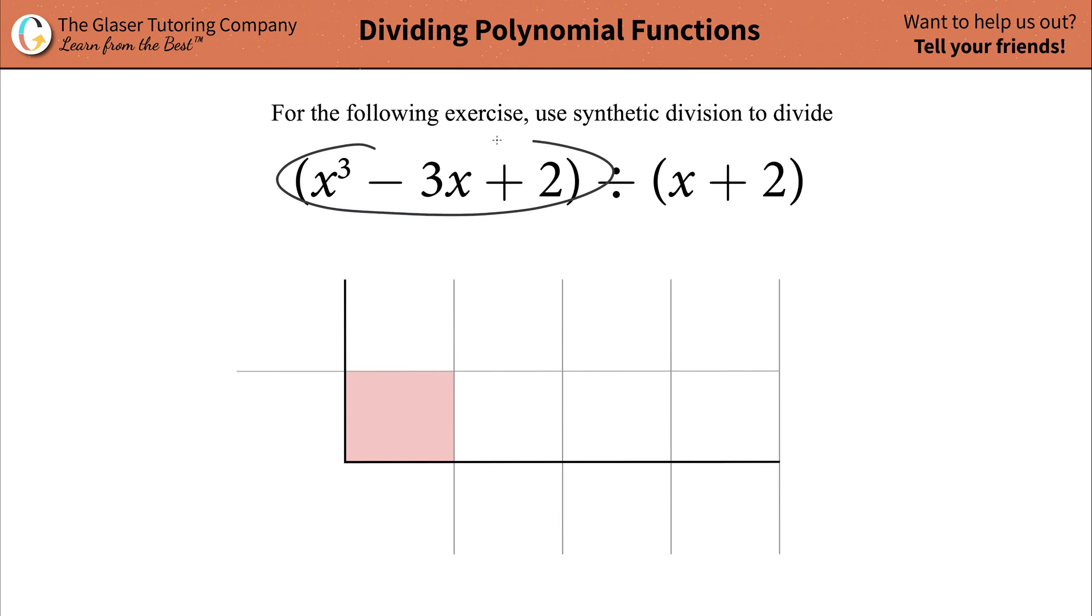So the first thing is to focus on your dividend, which is the term to the left of that division symbol. Whatever the highest power of your x term is will determine how many boxes are going to go inside of this overall big black box.